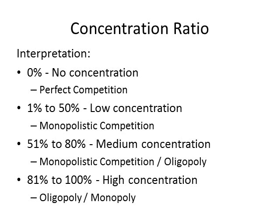Zero percent indicates no concentration. One percent to fifty percent represents low concentration, characteristic of monopolistic competition or perfect competition. Fifty-one percent to eighty percent is medium concentration, characteristic of monopolistic competition or oligopoly. And eighty-one percent to one hundred percent is high concentration, indicating either an oligopoly or a monopoly.